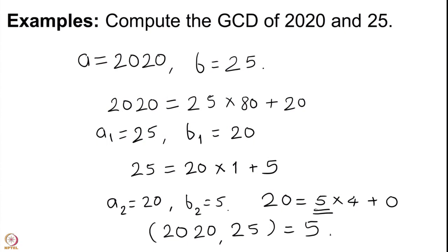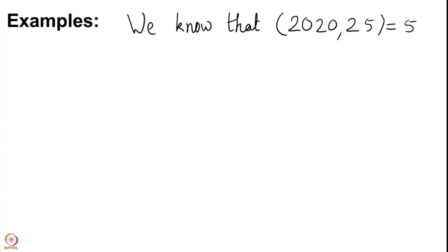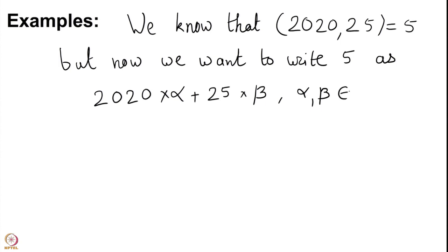But wait, there is one more thing remaining. We now want to write 5 as a linear combination of 2020 and 25. We can use the division algorithm steps to go back. We have been able to write 5 as a linear combination of 25 and 20. We know the GCD of 2020 and 25 is 5, and now we want to write 5 as 2020×α + 25×β where α and β come from integers.